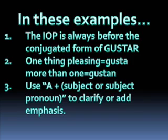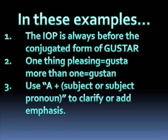Now since we've clarified that gustar means 'to be pleasing,' it should be easier to understand why we conjugate gustar the way we do. Observe: 'The apples are pleasing' — gustan las manzanas. 'The apple is pleasing' — gusta la manzana. Of course, the sentence gusta la manzana doesn't make much sense because if the apple is pleasing, it has to be pleasing to somebody. So we complete the sentence with the IOP — me. Me gusta la manzana.